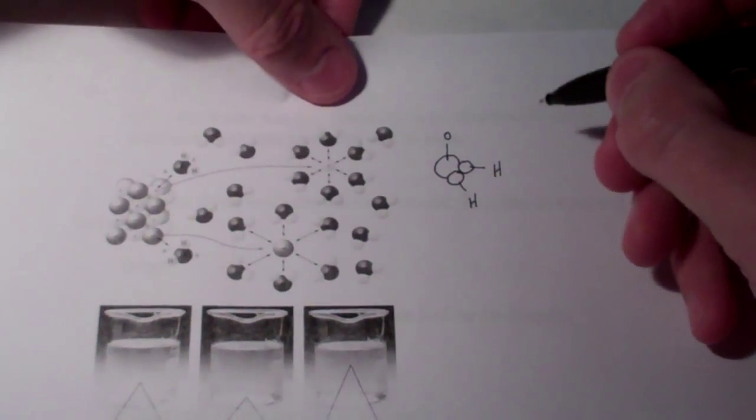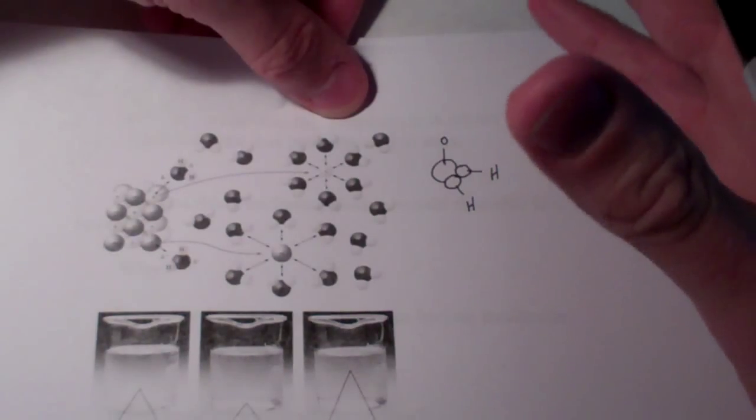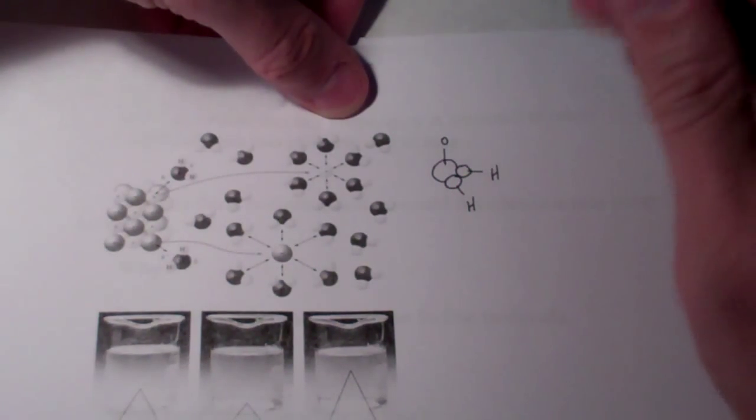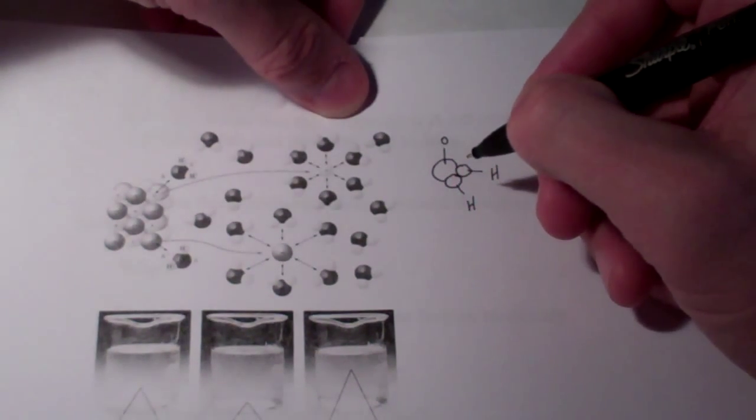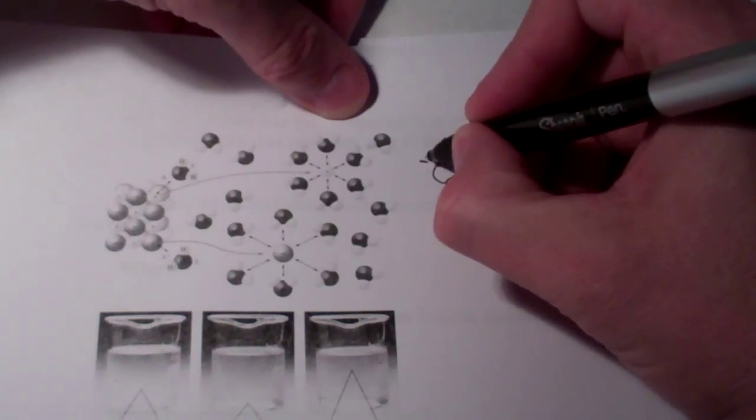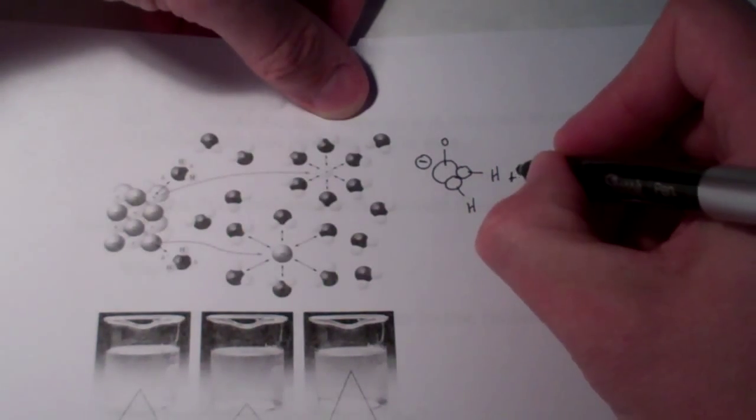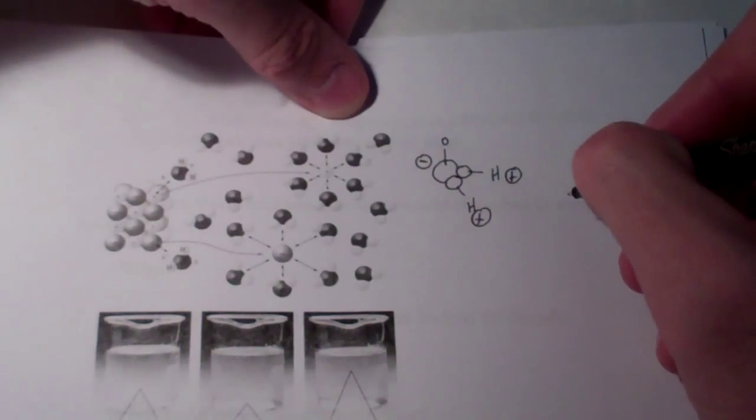Hopefully you remember from an earlier chapter that water is a polar molecule. That means it has a dipole, but for our purposes right now, we're going to say it has a positive and negative end. This oxygen end has a negative charge, and the hydrogen ends have a positive charge. So it's a nice polar molecule.